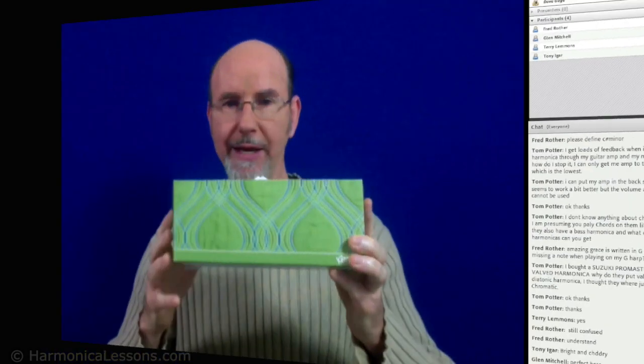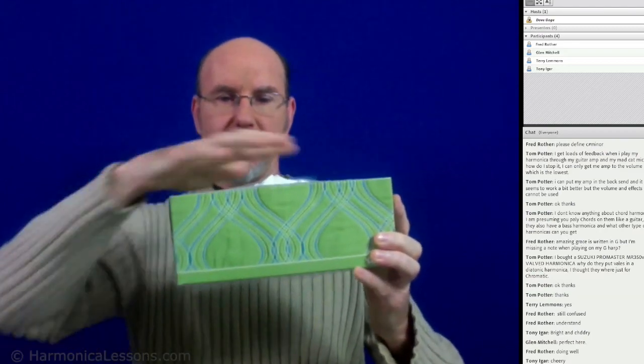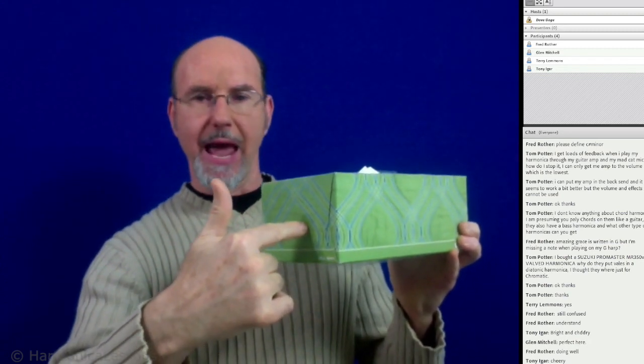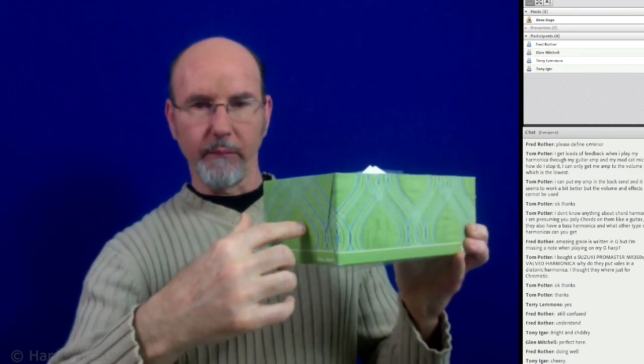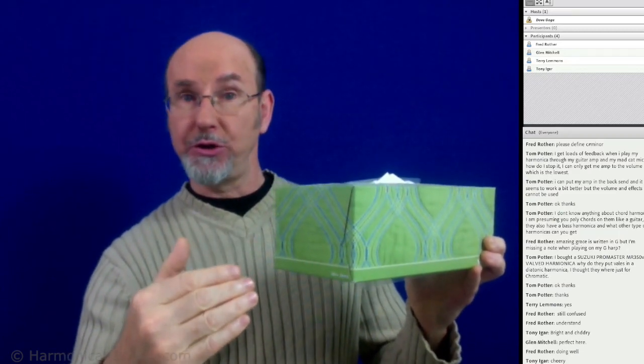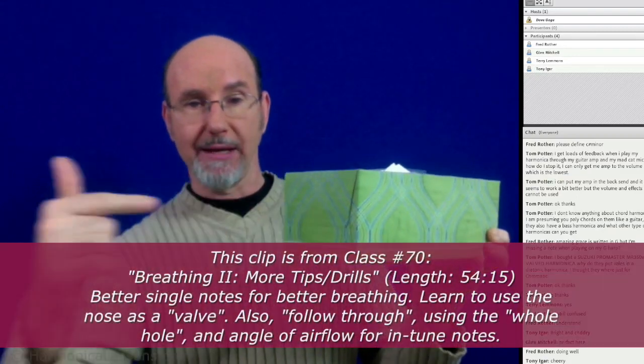Now I mentioned this earlier too about the angle of the harmonica. Here's the point: this box, this is the hole of your harmonica. Air goes in this way and what we want to do in order to play notes in tune when we play harmonica is we want the air to go straight into the hole, not at an angle down or an angle up.